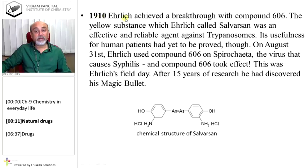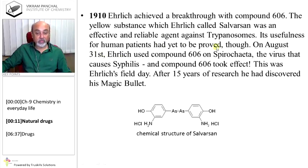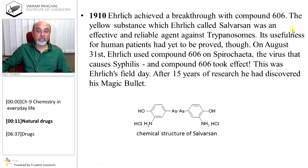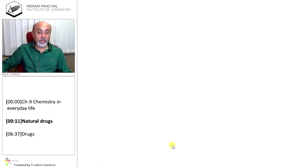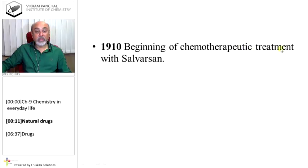Trypan Red is an azo dye. However, it soon turned out that Trypan Red could not kill all types of trypanosomes. But his first success incited him even more. In 1910, Ehrlich achieved a breakthrough with compound 606 — the yellow substance he called Salvarsan, an effective and reliable agent against trypanosomes. On August 31st, Ehrlich used compound 606 on spirochetes, the pathogen that causes syphilis, and compound 606 took effect. After 15 years of research, he had discovered his magic bullet, Salvarsan, used against syphilis. This was the beginning of chemotherapy in 1910 — using chemicals for treatment of diseases.